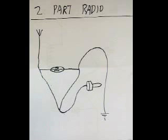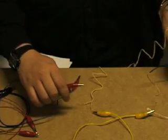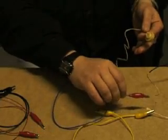This is another very basic crystal radio. What we have here is our earthing and our antenna wires. In between the two of them we have our diode.